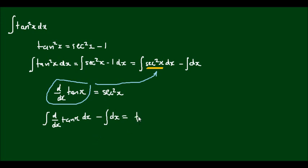So the first part is just tan x minus the second part, where the integral of dx integrates to x. We can consider that this elongated s and the d also cancel each other out.